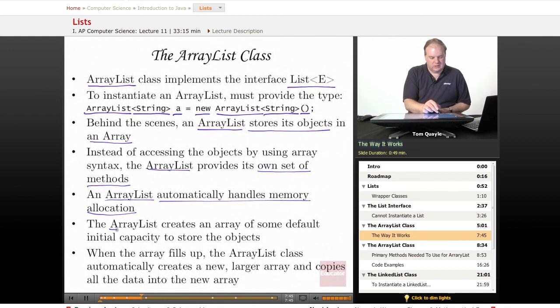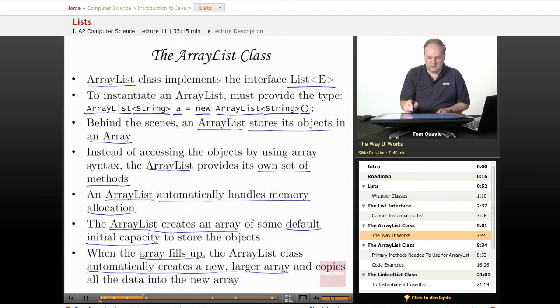So the way the ArrayList works is it creates an array of some default initial capacity. So it allocates an array, and when the array fills up, the ArrayList will automatically create a new, larger array for you and copy all the data into the new array. So the ArrayList class handles all the memory management for you. You don't ever have to worry about there not being enough room in the array that's behind the scenes that the ArrayList is using. It manages that memory for you, and automatically, without even giving you an indication that it's doing so, it will create a new, larger array if you need more storage for your ArrayList. So it's very convenient and easy to use in that respect.